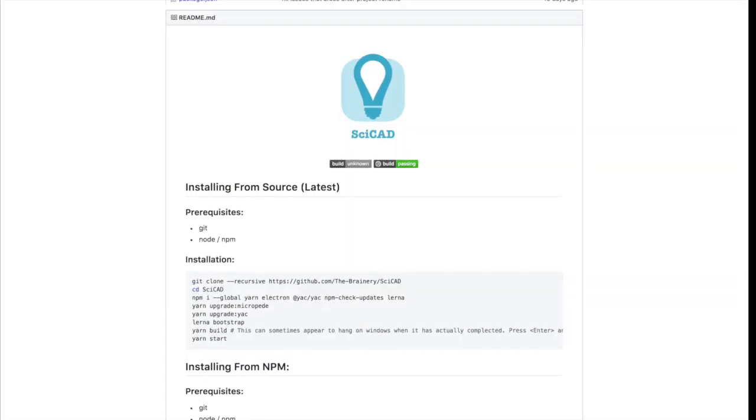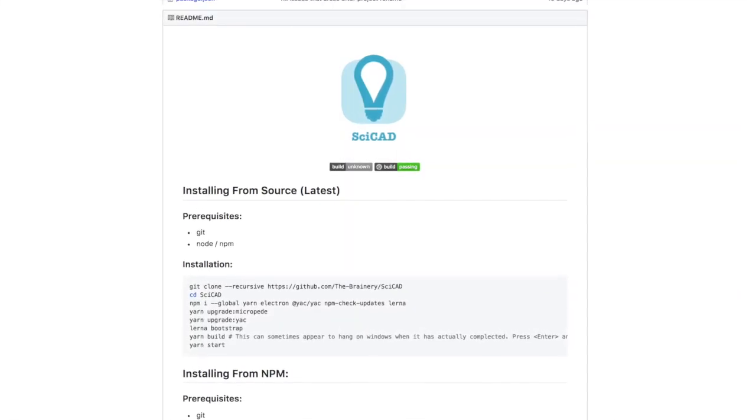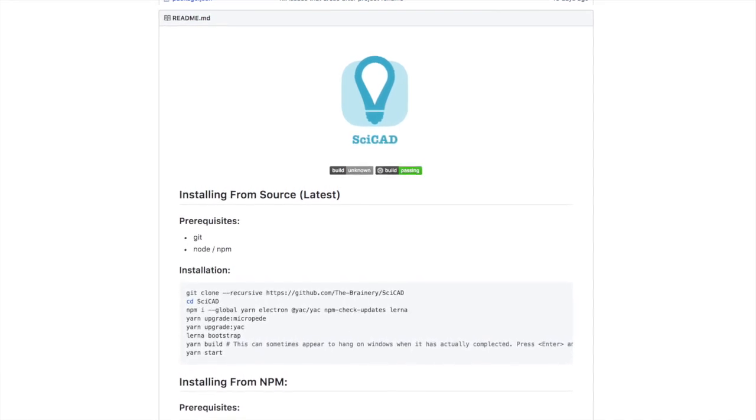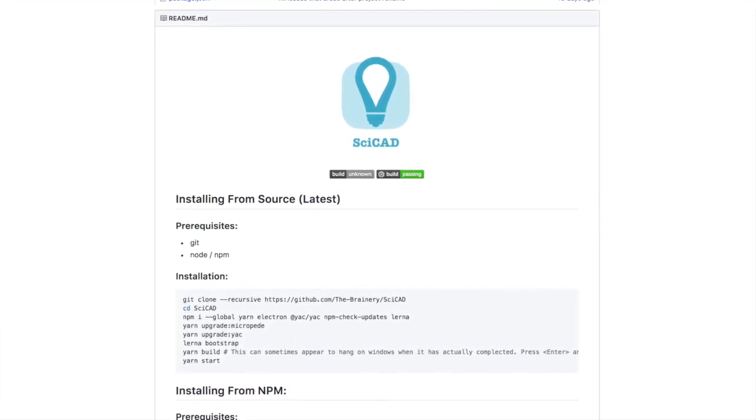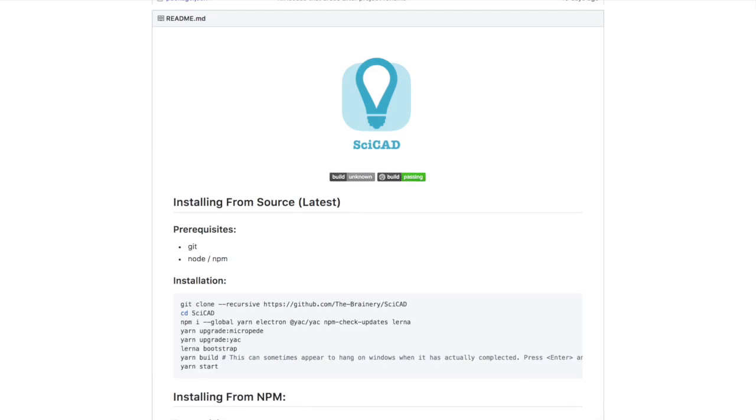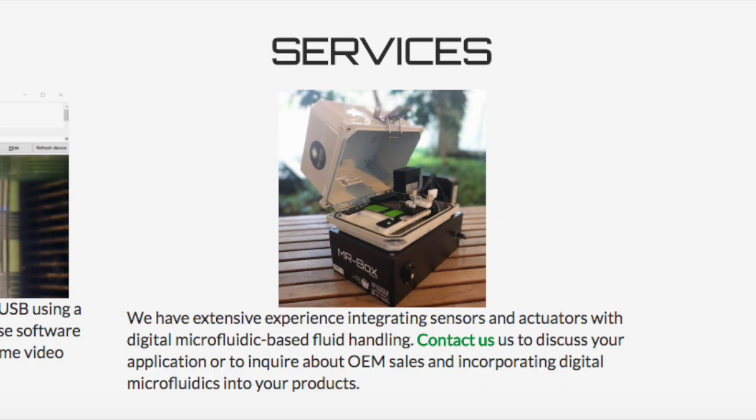I also renamed the project SciCat as an homage and thanks to the company SciBots. SciBots funded the development of this open source software project for almost an entire year and is run by Ryan and Christian Fobel, the original developers of the open hardware project of the DropBot.